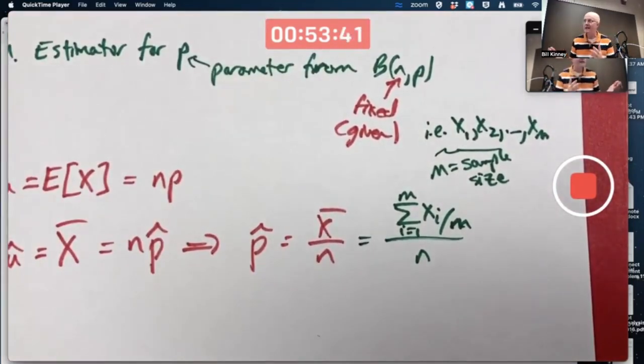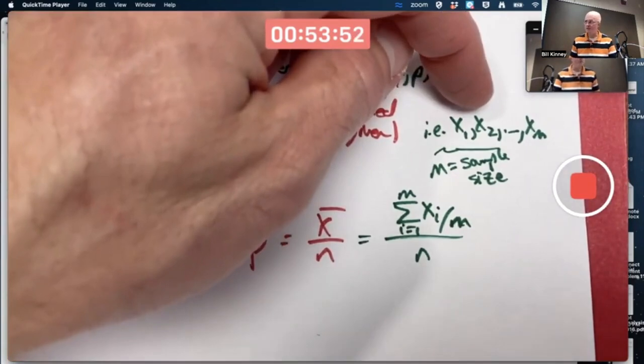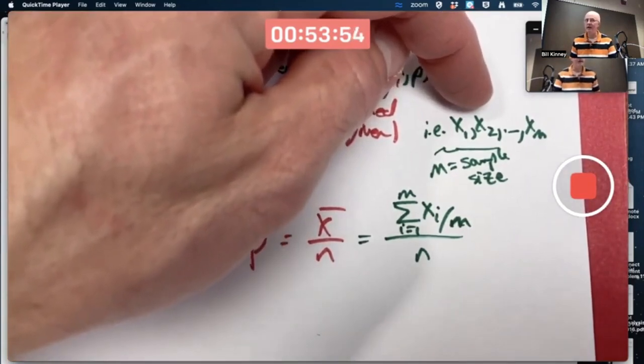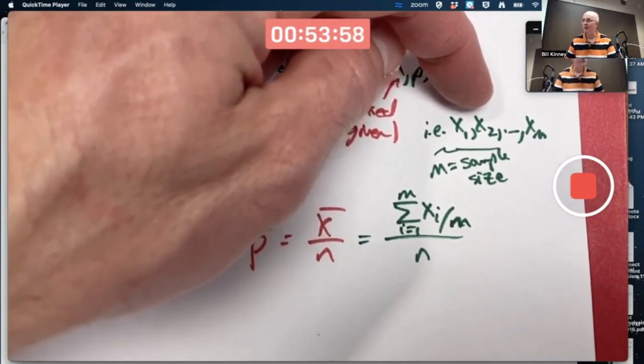Say N is 20. I'm shooting free throws. I'm attempting 20 free throws. And P is 0.4. I got a 40% chance of success. Each of these numbers, their observed values would be between 0 and 20, most likely close to 8, right? N times P would be 20 times 0.4 is 8.